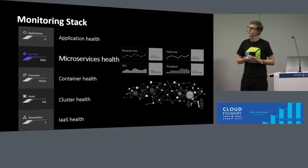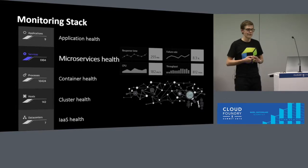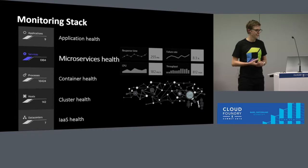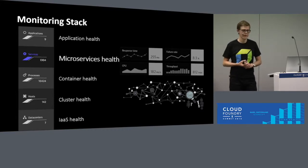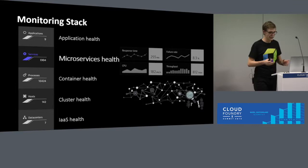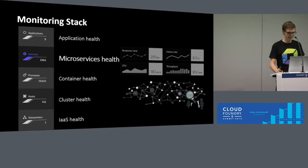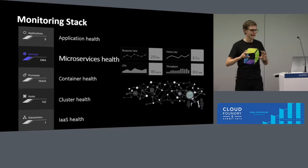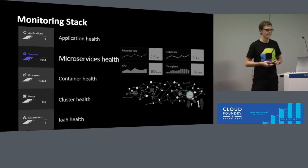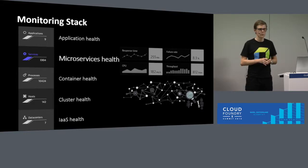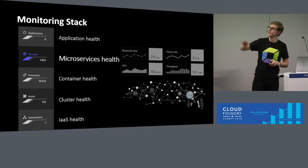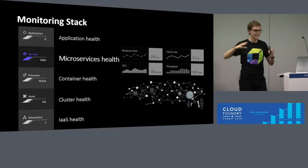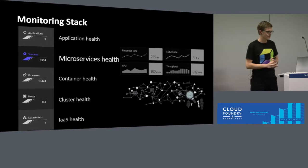When it comes to the microservice level, key metrics include CPU usage, throughput, failure rate, and the response time of each service. It's also important to understand how the services interact with each other in order to understand bottlenecks and where to scale up or scale down. This is shown by the picture on the bottom, where we can see end-to-end communication going on within our microservice environment.